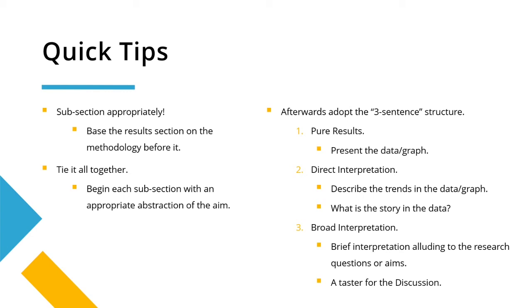After you do all this, you may want to adopt the three-sentence structure. So once you've tied it all together and referenced your figure, you do your three-sentence structure — though you don't have to take it literally, as three sentences might be a little too short, so it can be more. The first part: present the pure results — so say 'in Figure 7, the results of Experiment 2 show...' something along those lines. The next step is a direct interpretation: what jumps out at you from the graph? You explain the graph in words.